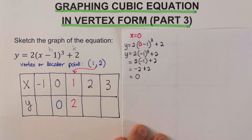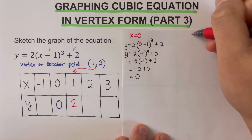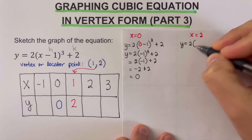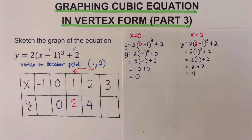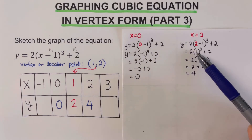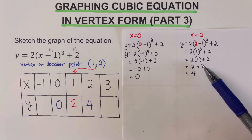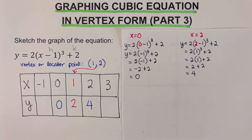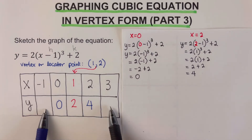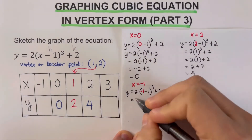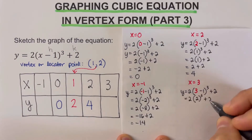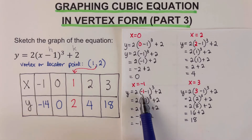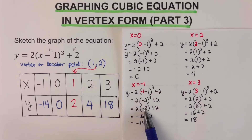Next, we determine y when x equals negative one and x equals 3. When x equals negative one: negative one minus 1 is negative 2, negative 2 cubed is negative 8, and negative 8 times 2 is negative 16, plus 2 gives negative 14. When x equals 3, y equals 18.